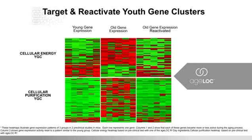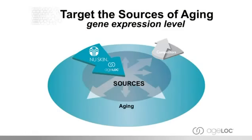To put it simply: if you don't have any energy, you can't clean. It's just like a vacuum cleaner you can no longer plug into the wall — it becomes a lot harder, and before you know it you're tripping over all the junk. So we have targeted the genes involved in cellular energy — a youth gene cluster — and cellular purification — a separate youth gene cluster — and as we age, we can target and try to reactivate them.